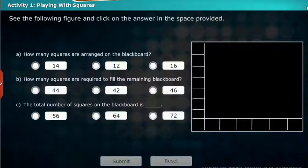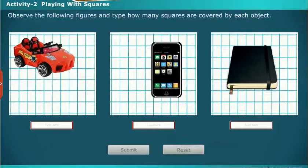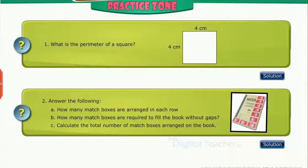Now, let us perform an activity and solve the problems. See the following figure and click on the answer in the space provided. Now, let us perform an activity and solve the problem. Observe the following figures and type how many squares are covered by each object. Practice zone: Try to solve the questions on your own. Click solution tab to verify your answers.